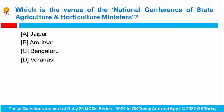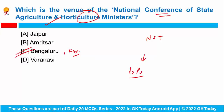Which is the venue of the National Conference of State Agriculture and Horticulture Ministers? This conference was inaugurated in Bengaluru, Karnataka. Union Agriculture Minister Narendra Singh Tomar launched the Platform of Platforms under E-Naam. The conference is organized by the Department of Agriculture and Farmers Welfare to commemorate Azadi ka Amrit Mahotsav.